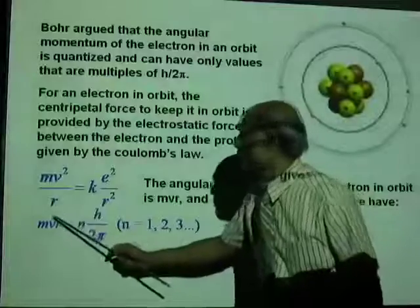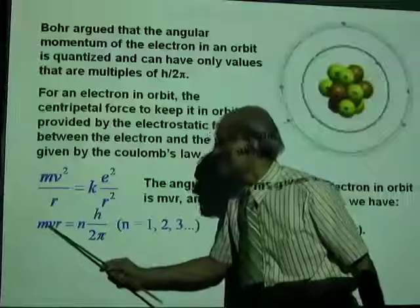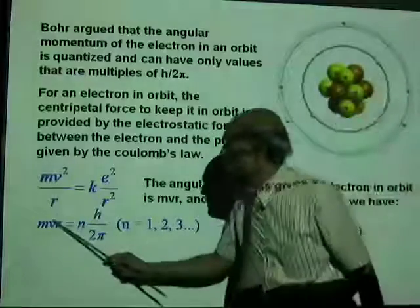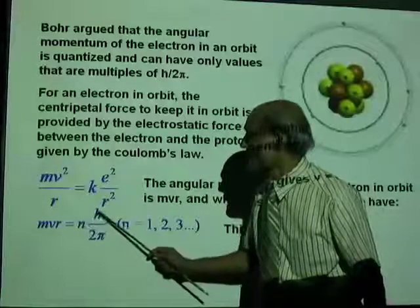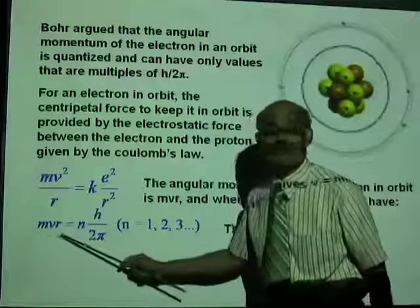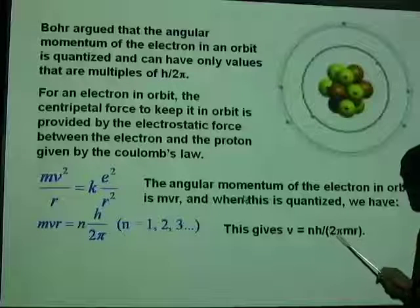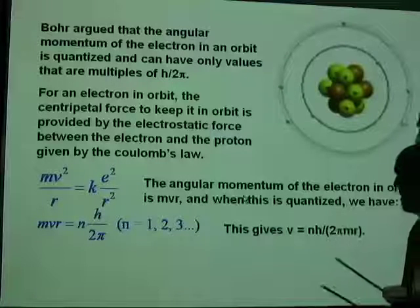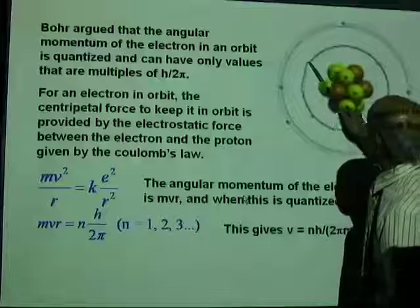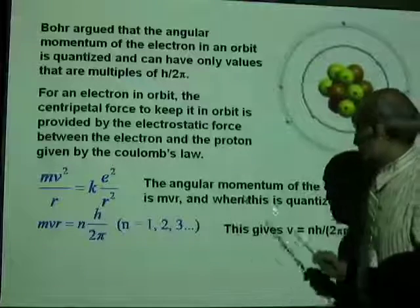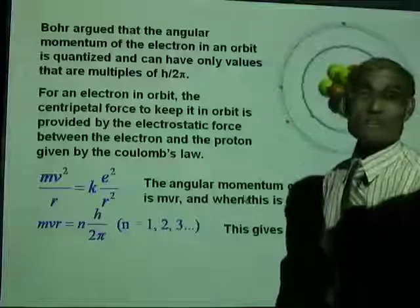Now, we can actually solve for v from that equation. Can you solve for v from there? v will be equal to n h divided by 2 pi m r, and that is the orbital velocity of the electron — the velocity of the electron in an orbit — where n equal to 1 is orbit 1, n equal to 2 is orbit 2, and so on.